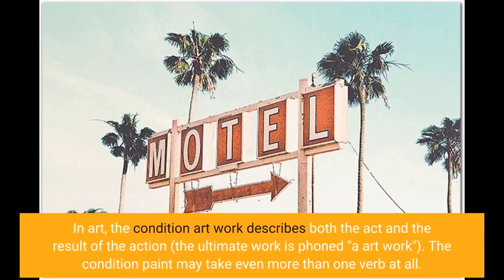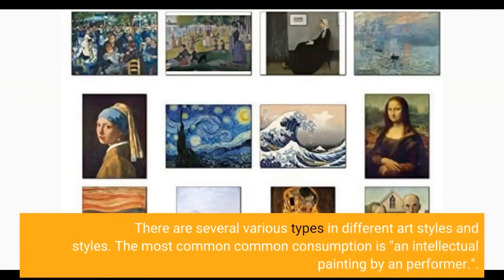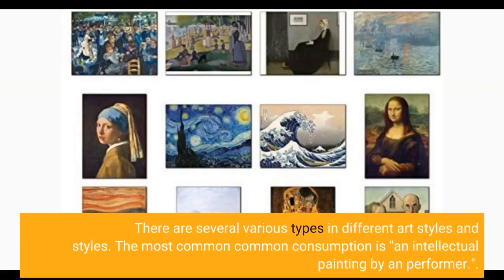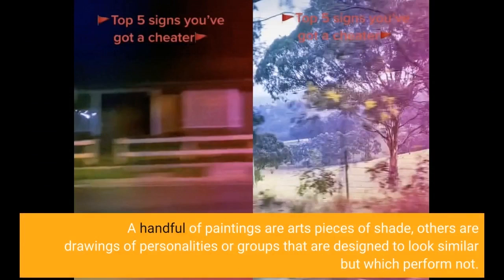In art, the term artwork describes both the act and the result of the action. The term paint may take more than one meaning. There are several different types across different art styles. The most common use is an intellectual painting by a performer. A handful of paintings are art pieces of shade; others are drawings of characters or groups designed to look similar but which do not.